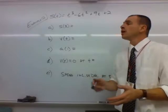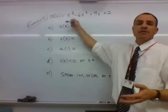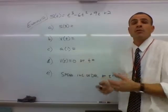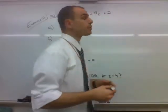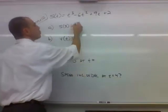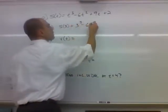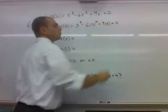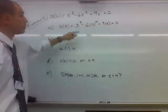Well, if we're interested in the position of an object at a certain time and we have the position function, all we're going to do here is just plug in 3 to our original position function. So s of 3 would just be 3 cubed minus 6 times 3 squared plus 9 times 3 plus 2. And what does that simplify to?